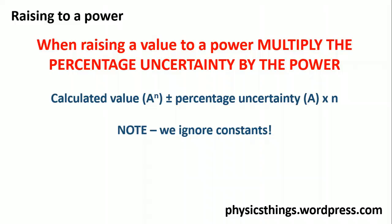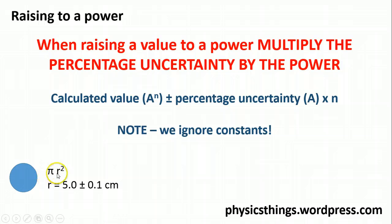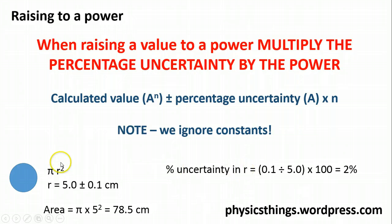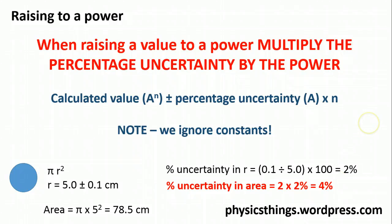It's worth noting that we ignore constants. For a circle with radius 5 ± 0.1 cm, the equation for area is πr². We have r raised to a power, so we convert to a percentage uncertainty: (0.1 ÷ 5) × 100 = 2%, then multiply by the power of 2 to get 4%. The area is π × 5² = 78.5 cm². We ignore π — it's just a constant with no inherent uncertainty — so the total percentage uncertainty in the area is 4%.